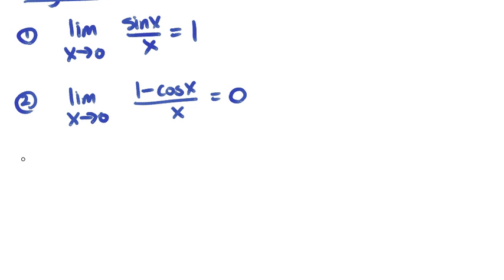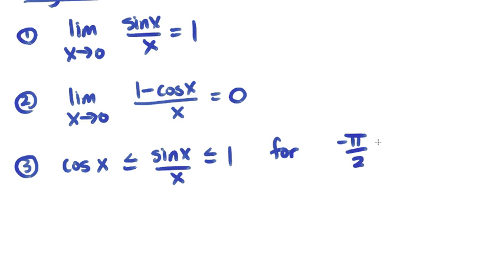And the third trig limit states that sin x over x is always greater than or equal to cos x and always less than or equal to 1 on the interval from negative π/2 to π/2, as long as x isn't 0.